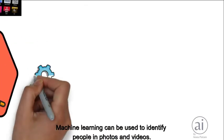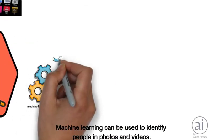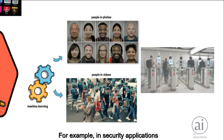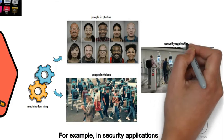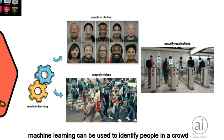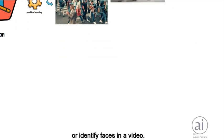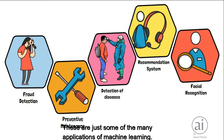Facial recognition: machine learning can be used to identify people in photos and videos. For example, in security applications, machine learning can be used to identify people in a crowd or identify faces in a video.